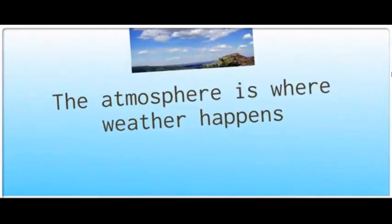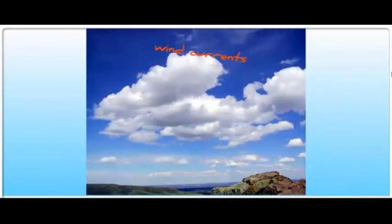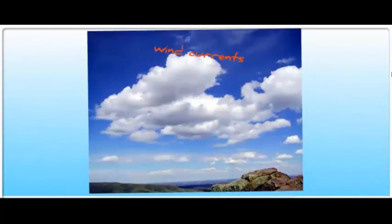Gases that we can't normally see. The atmosphere is where weather happens. Whenever we have storms or rain or anything, the atmosphere is where this is occurring. Wind currents are a big deal with the atmosphere because they transport things like clouds a long distance. If we didn't have that, then most of the Earth would be a desert.